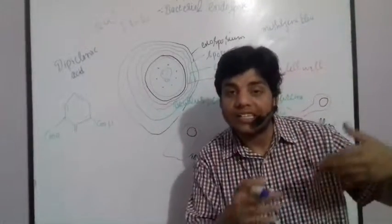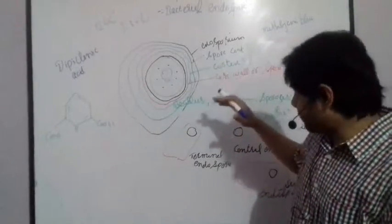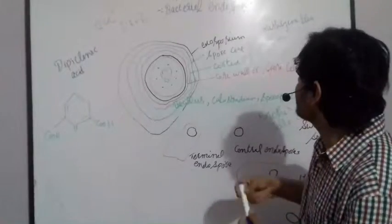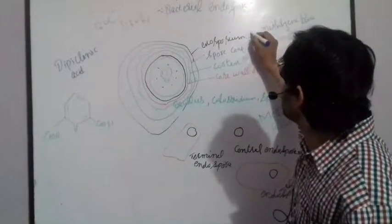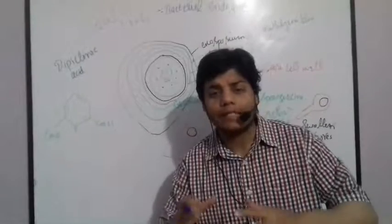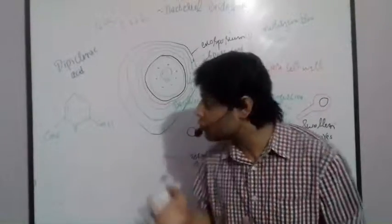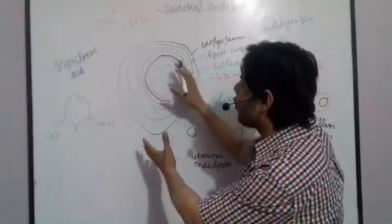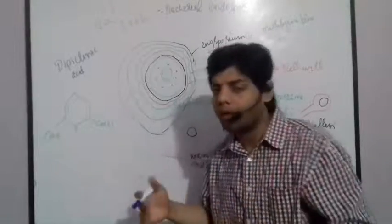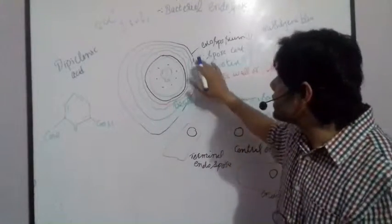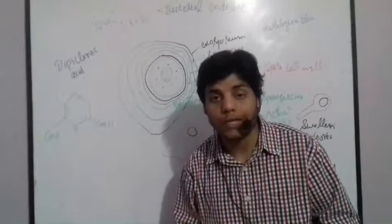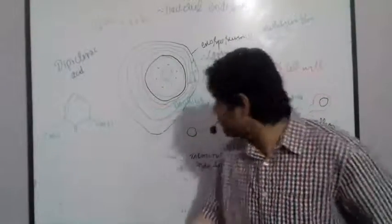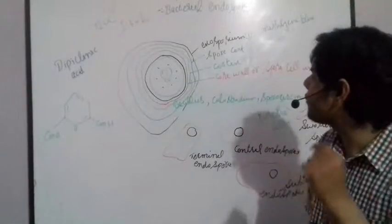Now let's talk about each layer in detail. The first layer is the exosporium, which is the most outer layer of the spores. It can cover the whole cell or all of the layers of the spores. This layer of the endospore is thin, delicate, and can easily rupture.